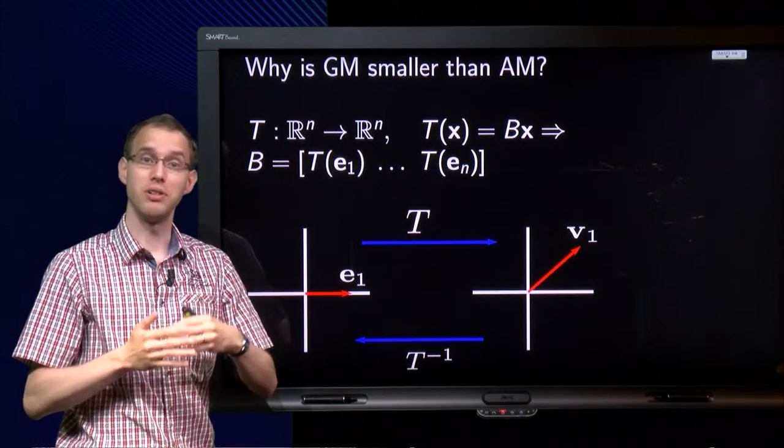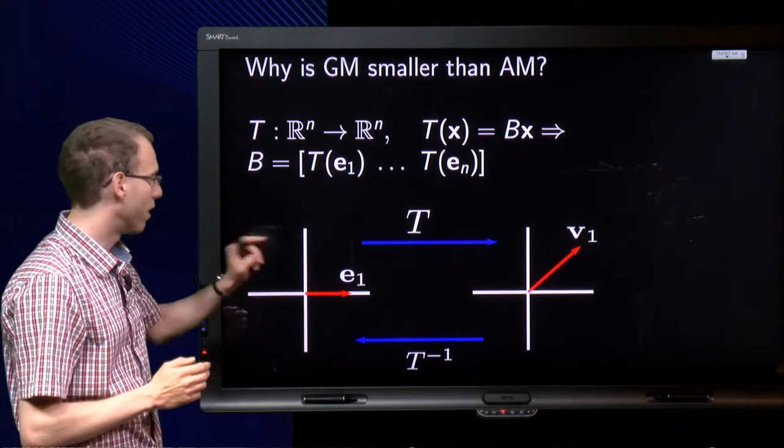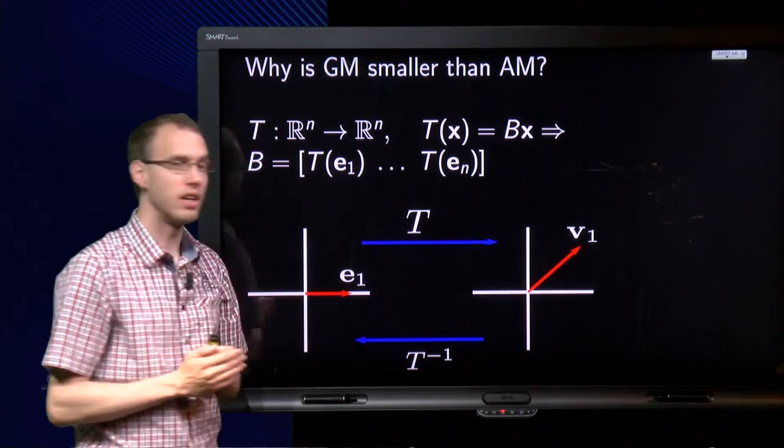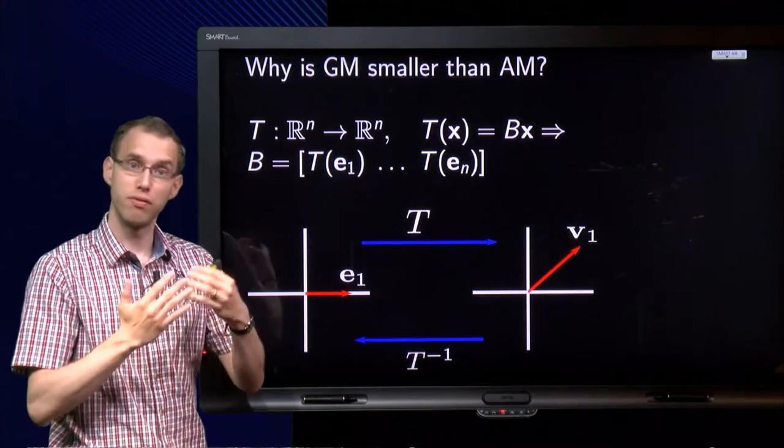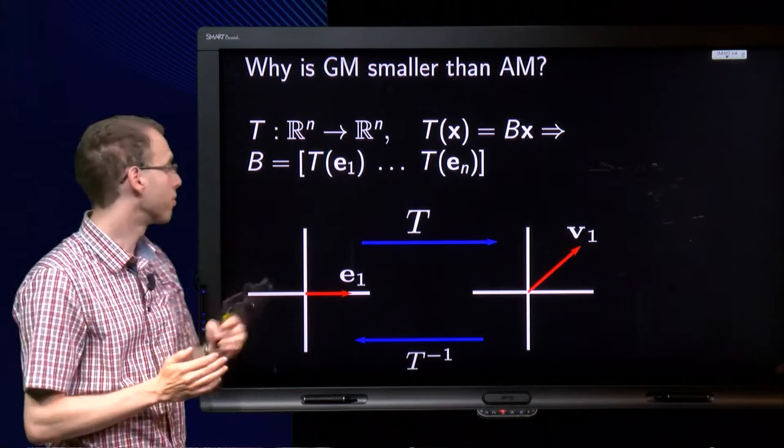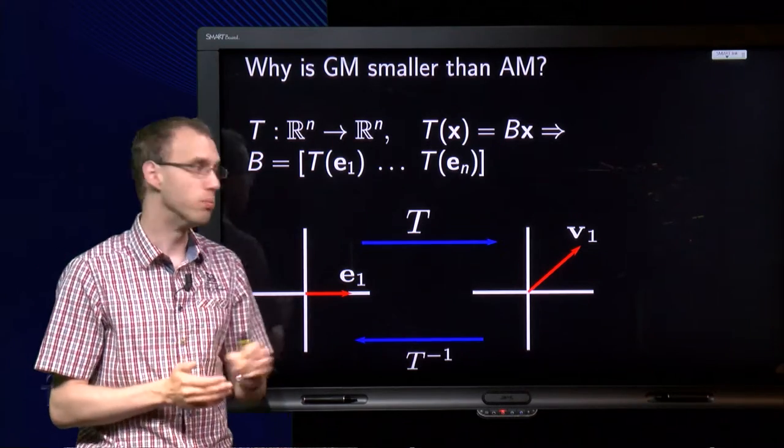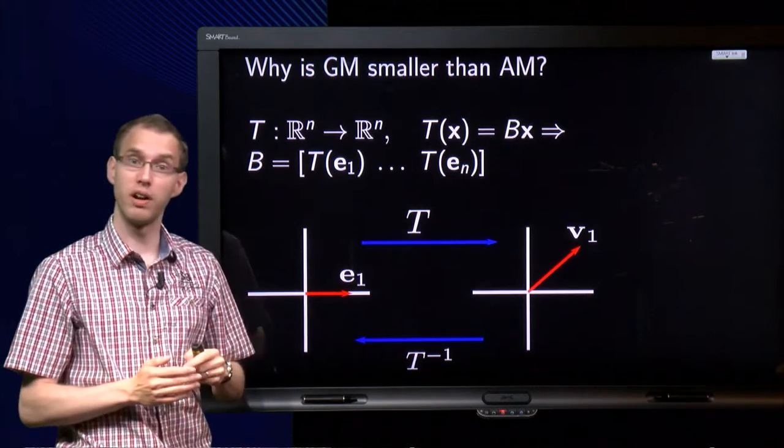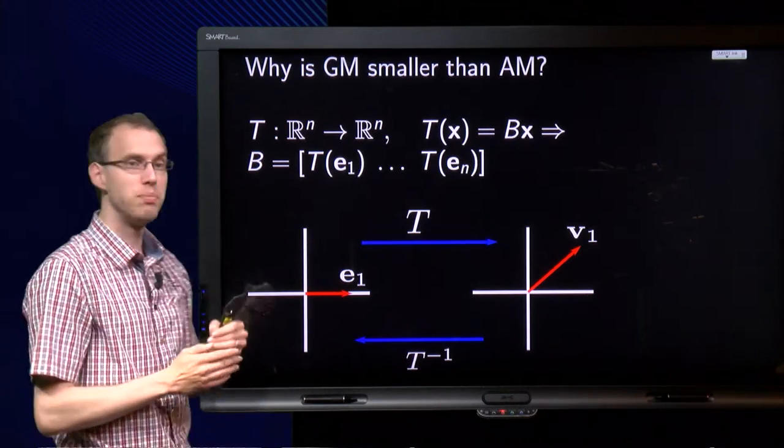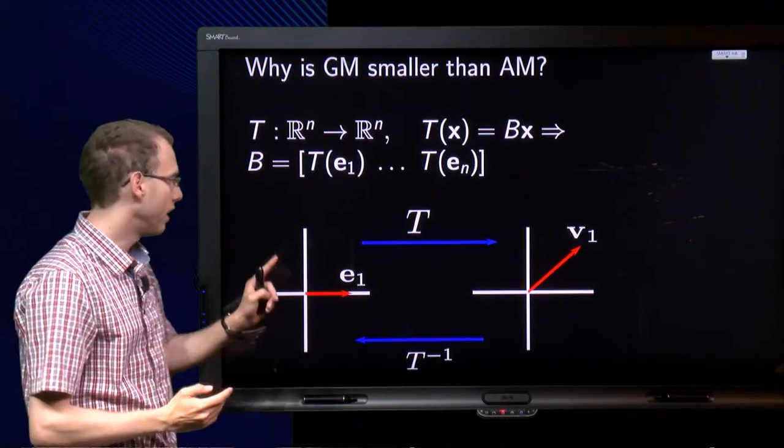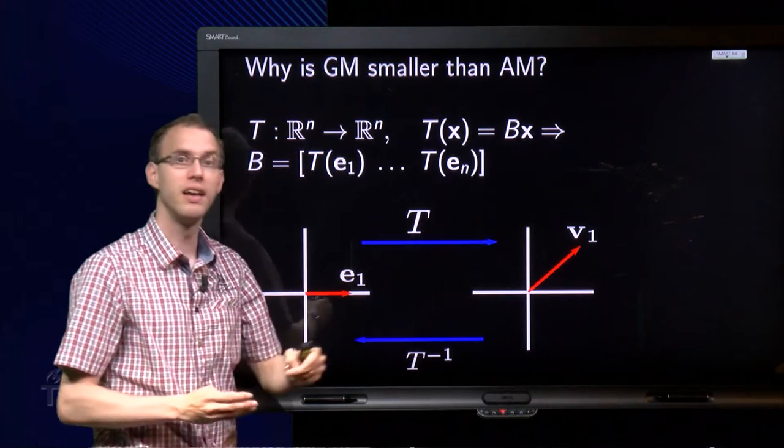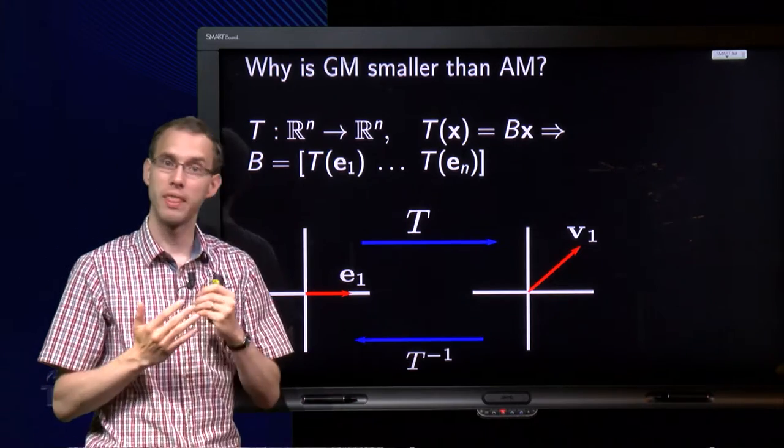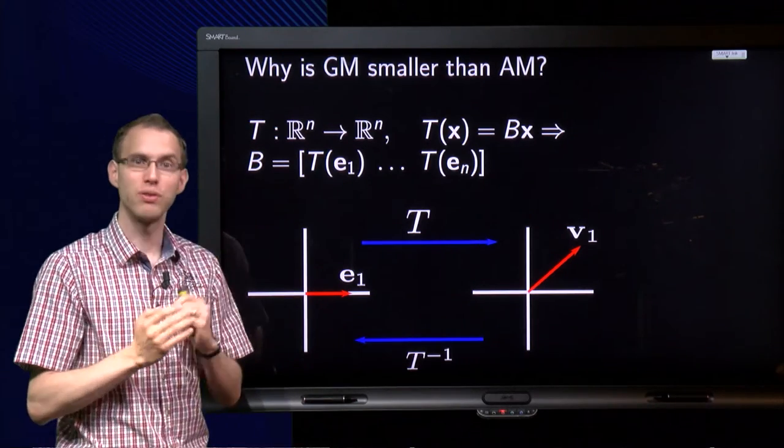So how does that look in the picture? If you have here your e1, then your T maps it to v1, then your first column of your matrix B should be v1. The inverse goes all the way around, so if your matrix B has its first column v1, then e1 is mapped to v1, and the inverse transformation maps it back to e1. And that is what we are going to use.